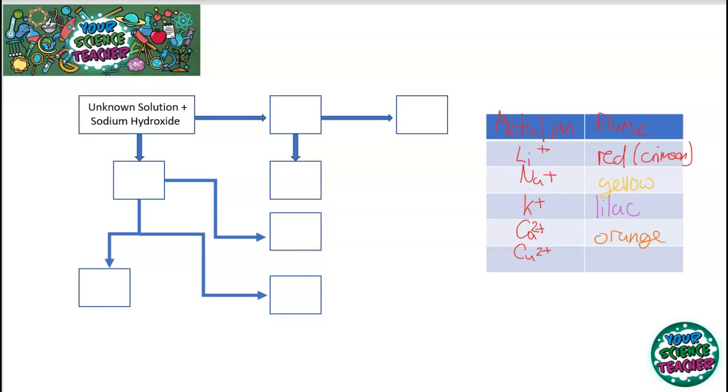And copper, you would observe a green flame. However, if the sample being tested contains a mixture of metal ions, then some of the flame colours can be masked. So you need to make sure that you have pure solutions to be able to carry out a flame test.